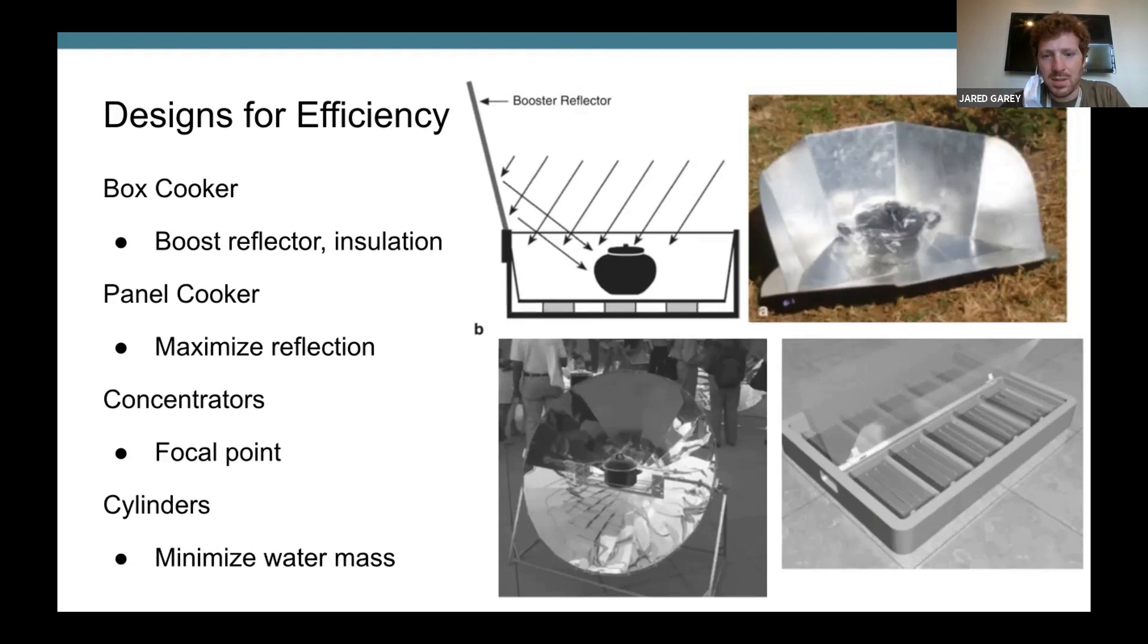The next type is the panel cookers. It's a little bit different. It maximizes the reflection, but it doesn't have as much insulation. It might have a little bit more tracking to the sun you have to do throughout the day.